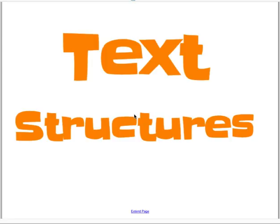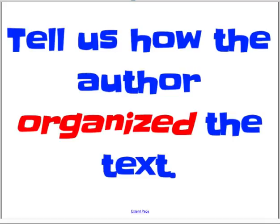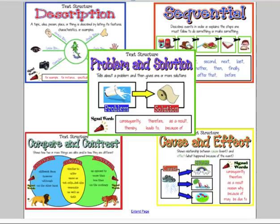Hi, 5th graders. Today we're going to continue our study of text structures. Remember, a text structure tells how the author organized the text. So far in our study, we've talked about description text structure, compare and contrast text structure, sequential or chronological text structure, and today we're going to focus on cause and effect text structure.